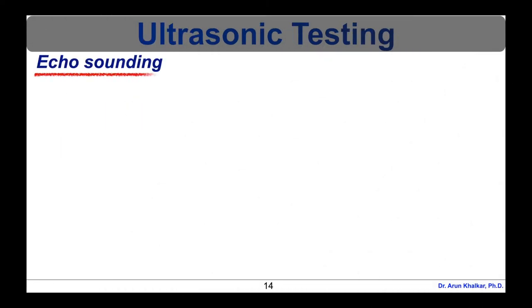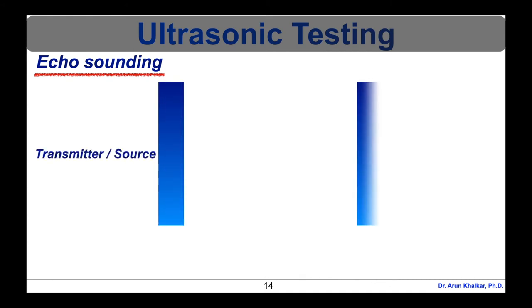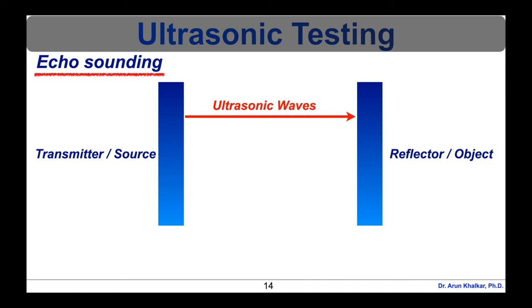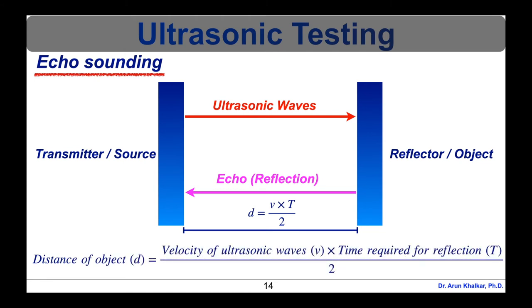Now let's see the echo sounding process. As shown in this diagram, echo sounding is a process in which ultrasonic waves are generated by a transmitter. They are directed towards the object and reflection is received. By knowing the time required to cover distance between transmitter and object and velocity, distance of the object from the transmitter can be determined. The distance between transmitter or source and the reflector or object is small d. Therefore, to obtain the distance of an object, small d equals velocity of ultrasonic waves, small v, times time required for reflection, capital T, divided by 2. So d equals v times T divided by 2. With the help of this formula, we can easily calculate or measure the distance of an object inside the material.